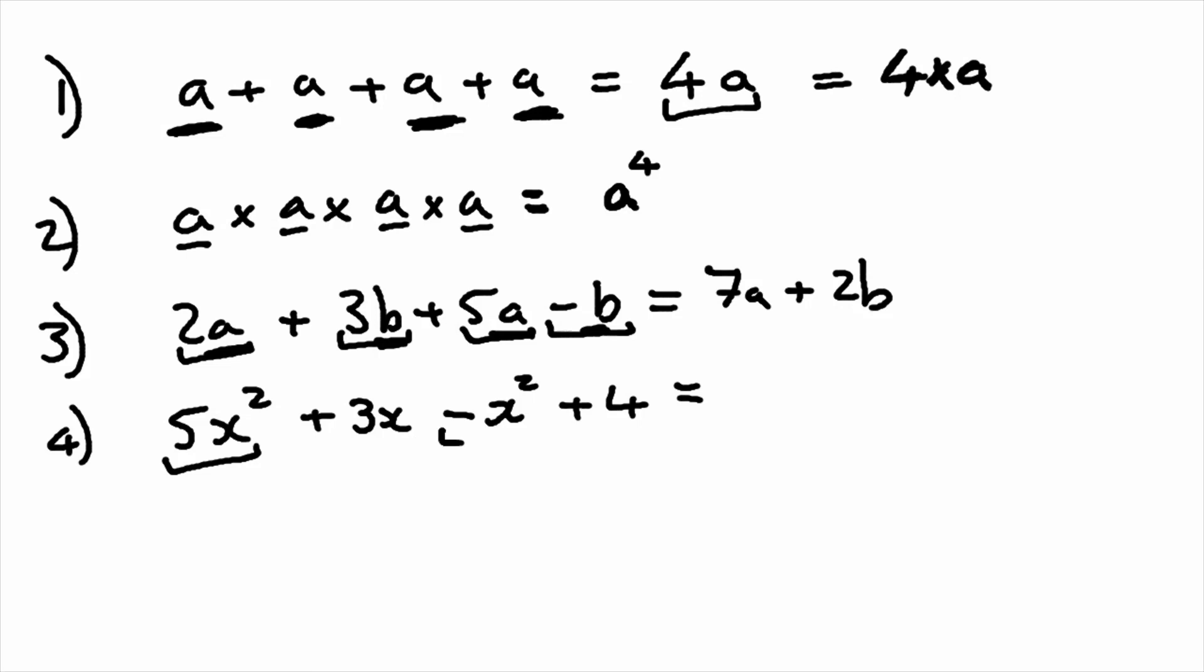What we can group together is the X squared terms. So we've got 5X squared minus X squared, which is going to give us 4X squared. 5 lots of something, subtract 1 lot of something, gives us 4 lots of that something. We can't simplify the 3X or the plus 4, so we leave them added on at the end.